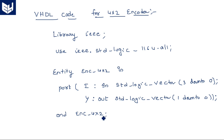This particular entity part is common for any type of VHDL style — whether it is a data flow model, behavioral model, or structural model. So the entity part is common for all the codes. Next, we look at the architecture for data flow model, structural model, and behavioral model.